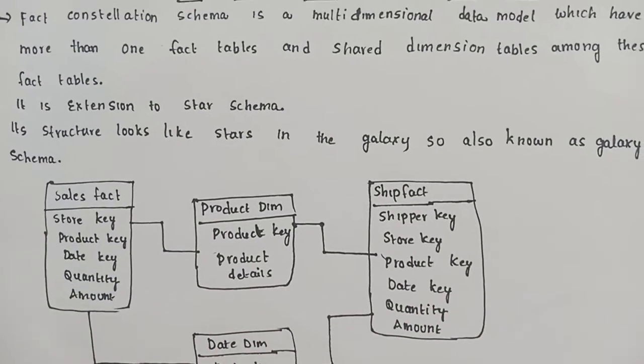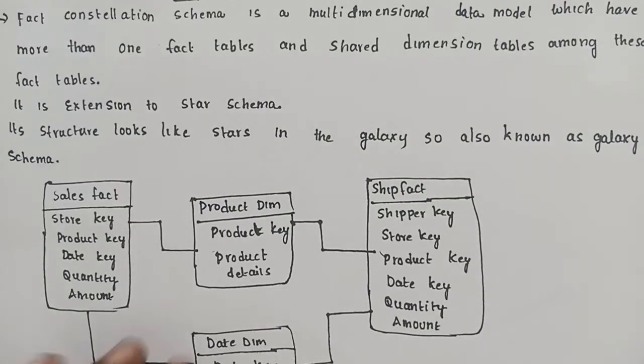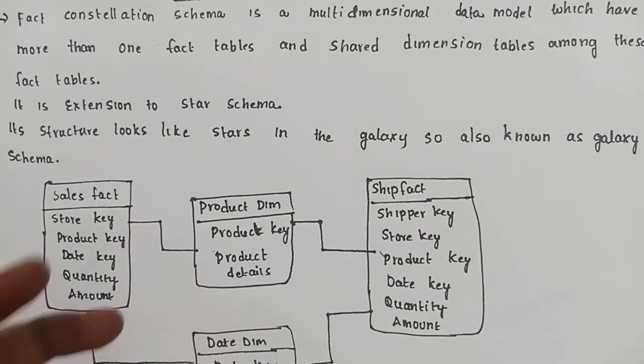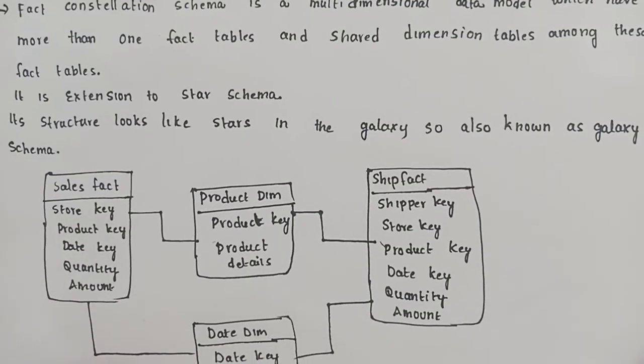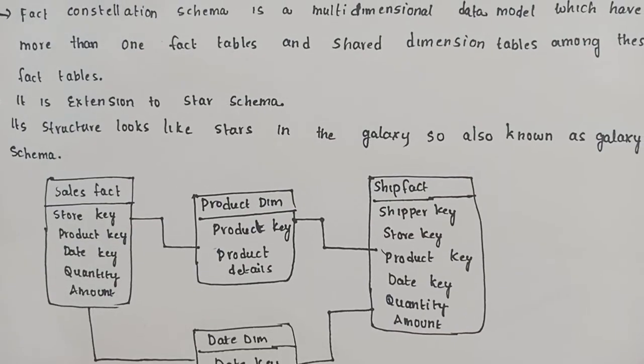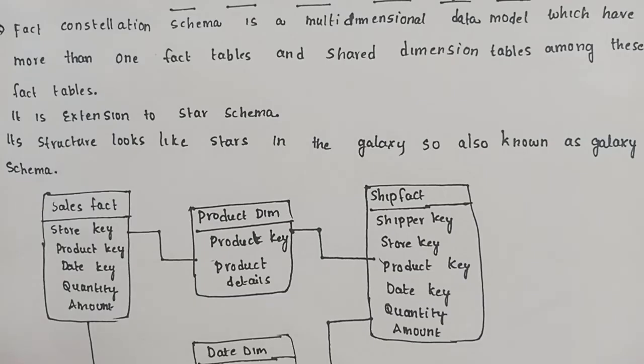Fact constellation schema is an extension to the star schema. Its structure looks like stars in the galaxy, so it is also known as galaxy schema.